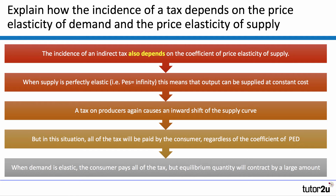Let's build a second chain of reasoning — this time on elasticity of supply, a slightly harder part to the question. The incidence of an indirect tax also depends on the coefficient of price elasticity of supply. When supply is perfectly elastic, i.e. elasticity is infinity, this means that firms can supply an output at constant cost — constant marginal cost. A tax on producers causes an inward shift of the supply curve; in other words, the marginal cost curve shifts upwards.